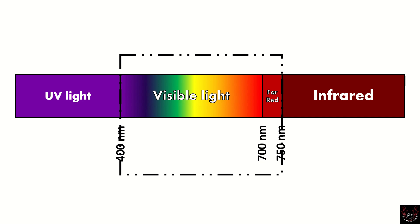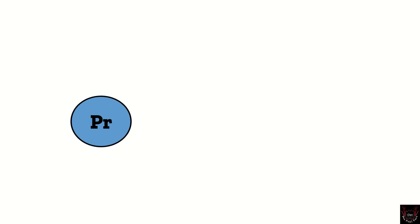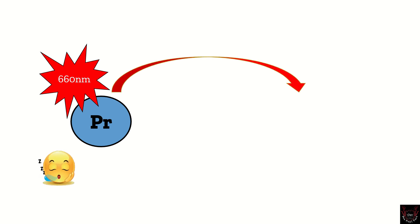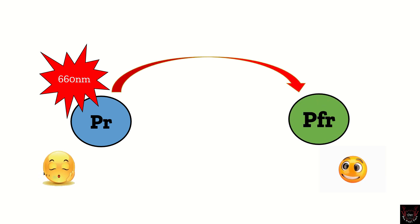Here comes the most important part — the interconversion of the two forms of phytochrome. Pr is blue in color and is the inactive form of phytochrome, which absorbs red light of 660 nanometers and gets converted to the active form of phytochrome, that is Pfr, which is light green in color.